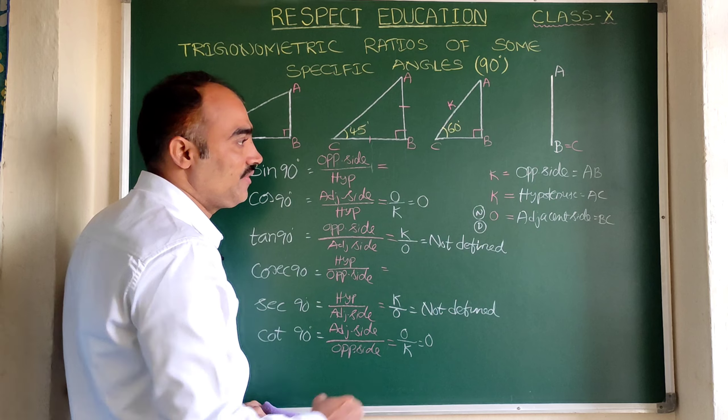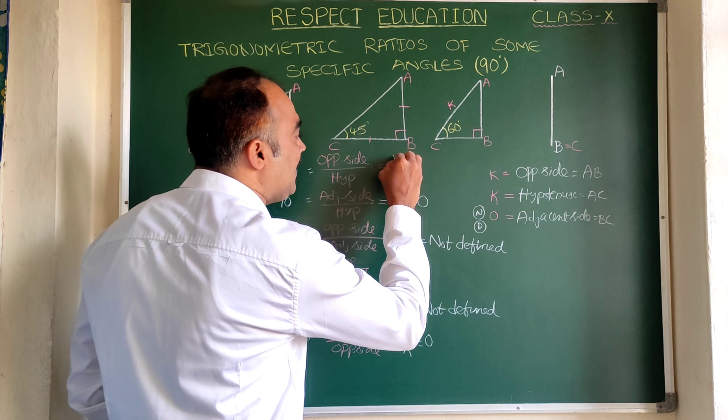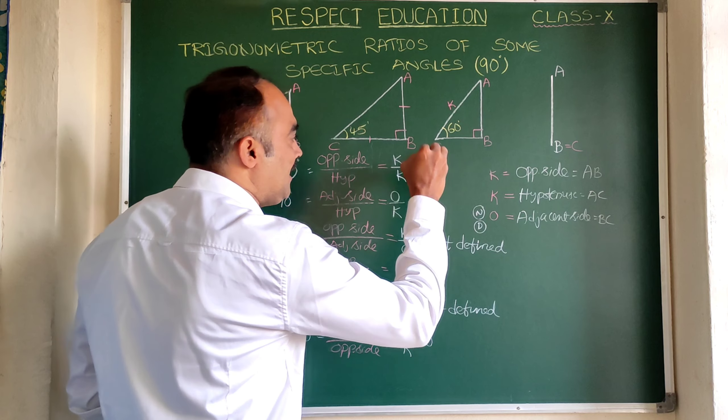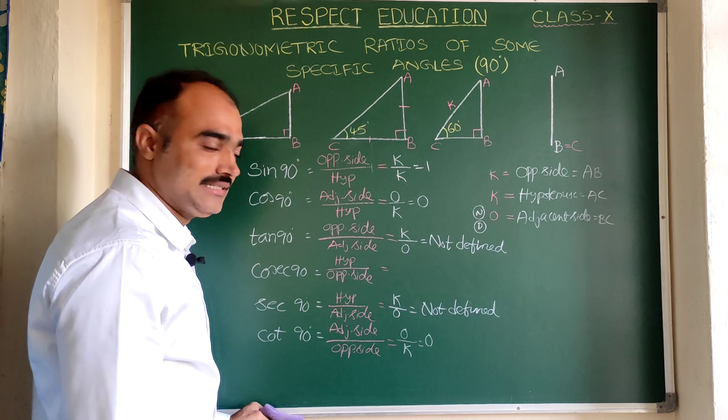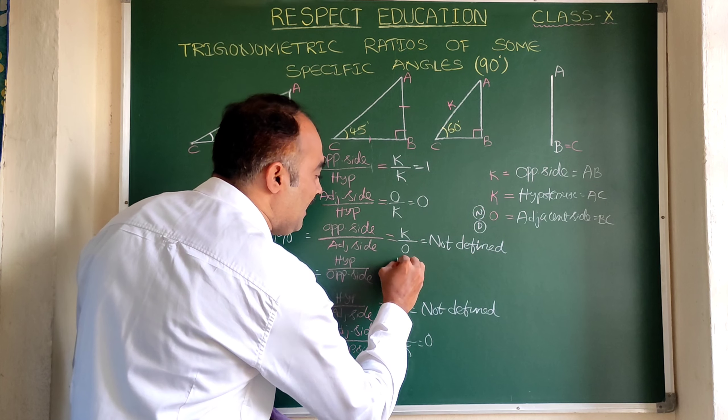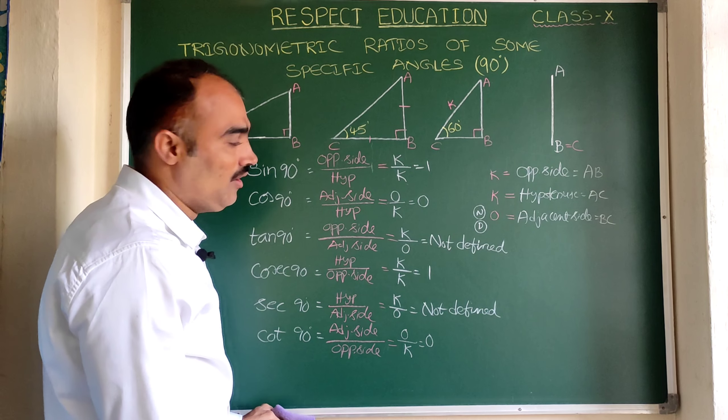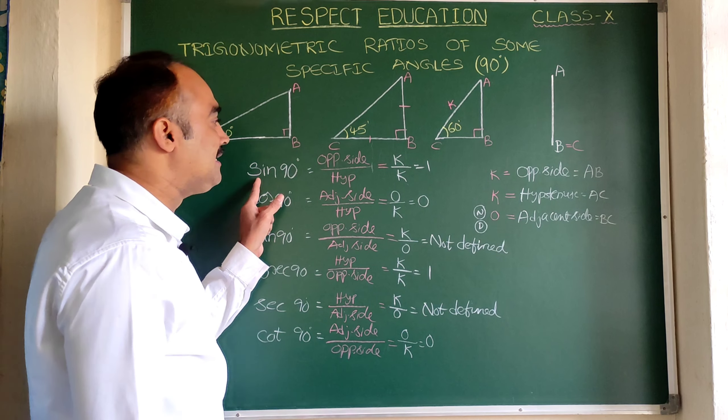Now let us see sin 90 degrees. Cosecant is sin's reciprocal. Sin is opposite side by hypotenuse. Opposite is K, hypotenuse is also K. So K by K is 1. So sin 90 degrees is 1. Now cosecant is hypotenuse by opposite side. Hypotenuse is K, opposite also K. So K by K is 1 on cancellation.